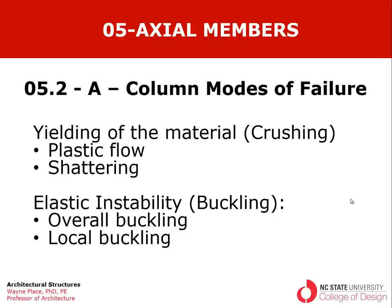Elastic instability occurs when the structure is not sufficiently stable and begins to change shape radically before the yield stress of the material is reached — which is why we call it elastic instability, because it occurs while the material is still in its elastic mode. We call this buckling for shorthand. There are two words that cause confusion: buckling and bending.